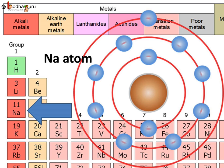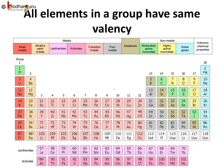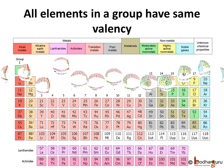So valency of sodium is one and sodium is a metal. So what is so special about groups? We already know that the electrons in the outermost orbit of the atom are called valence electrons. All the elements in a group have the same number of valence electrons, which means they have the same valency.